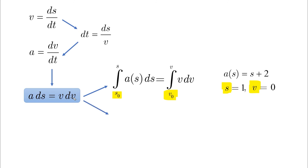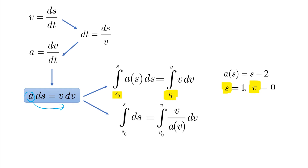The other possibility, which is not very common, is when we have a as a function of v. In this case, a goes to the other side and integration takes place with respect to s and v, similar to what we did above. An example would be a(v) given in the question with s and v as boundary conditions.